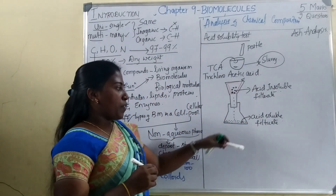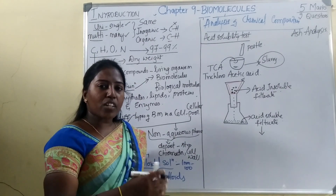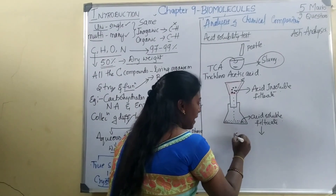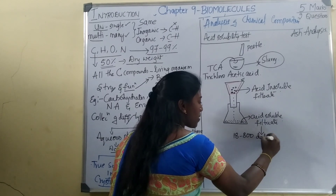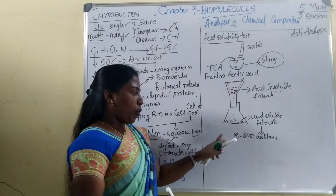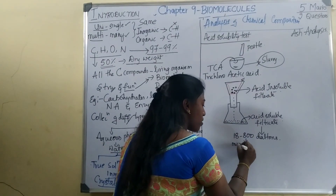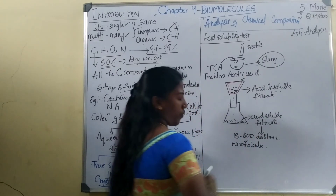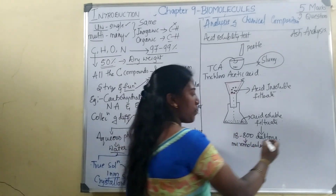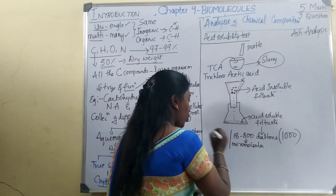The acid soluble filtrate consists of a large number of compounds whose molecular weight is very less — ranging from 18 to 800 Daltons, or less than 1000 Daltons. These molecules are called micromolecules or biomicromolecules. In the acid soluble filtrate we can see the presence of some inorganic compounds, water, and mineral salts.